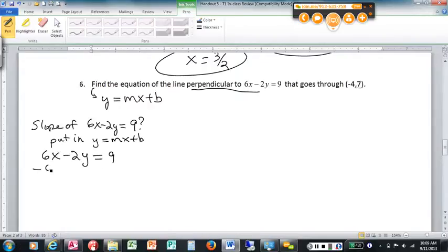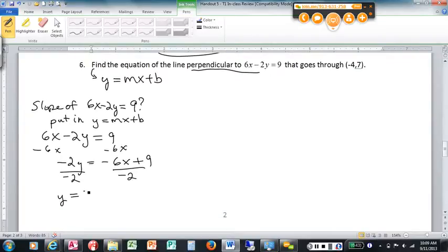So I'm going to subtract the 6x both sides. So I get minus 2y equals negative 6x plus 9, then divide off the negative 2. So that's y equals negative 6x divided by negative 2 and positive 9 divided by negative 2, which gives me y equals 3x minus 4 and a half, 9 halves, however you want to write that.